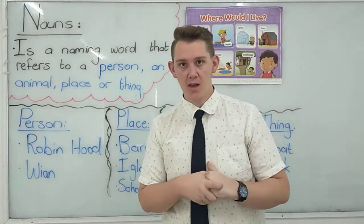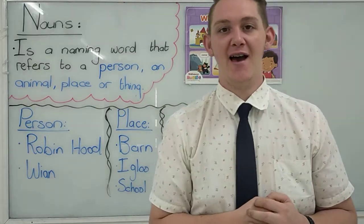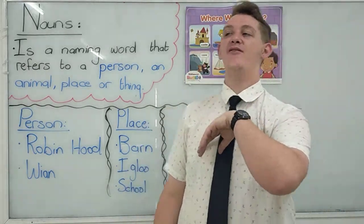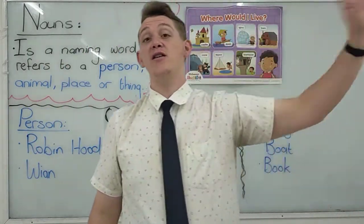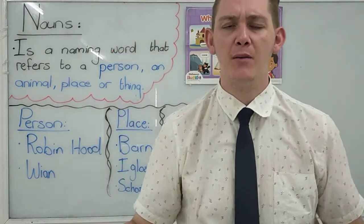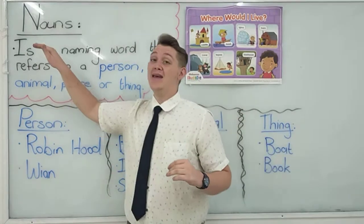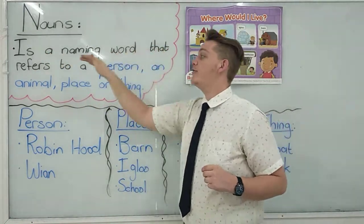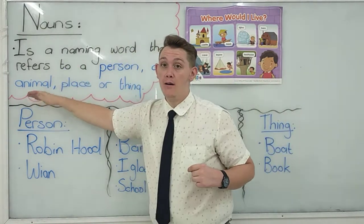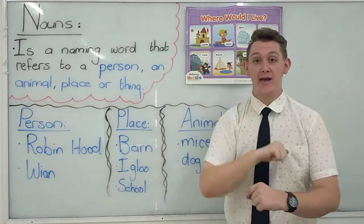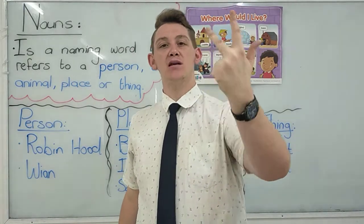Can you say it with me? Nouns. So we're not doing all those fancy stuff — demonstrative pronouns, this and that, he, she — we are finished with that, we know it. Today we're going to talk about a normal noun. A normal noun is a naming word that refers to a person, an animal, a place, or a thing. Person, animal, place, thing.